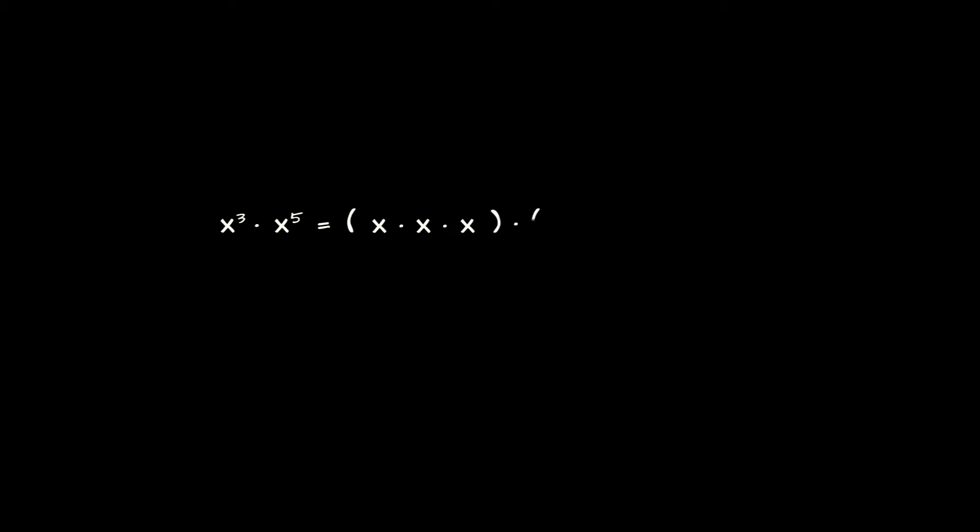We're going to try to uncover special properties that exponential notation satisfies. We'll begin by considering the case of two exponential expressions with the same base being multiplied by one another — here, x to the power 3 being multiplied by x to the power 5. Let's think about the underlying meaning of each expression: x raised to the power 3 is just equal to x times x times x — we're multiplying x by itself three times.